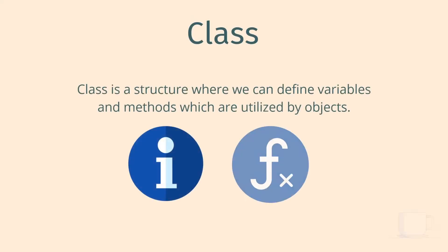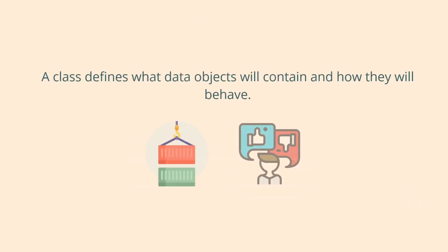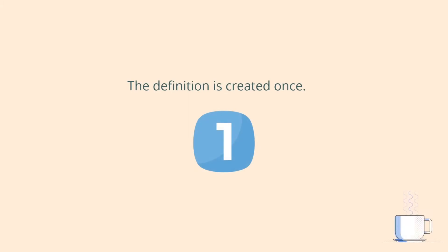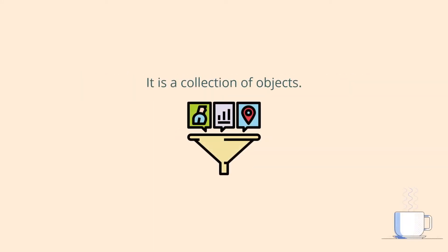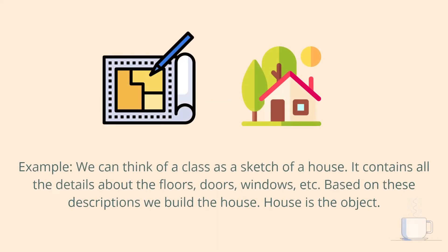Now let's talk about the second building block: class. A class is a structure where we define variables and methods which are utilized by our objects. Class defines what data objects will contain and how they will behave. The definition of a class is created only once, and memory space is not allocated when it is created. At the end, we can say a class is a collection of objects.